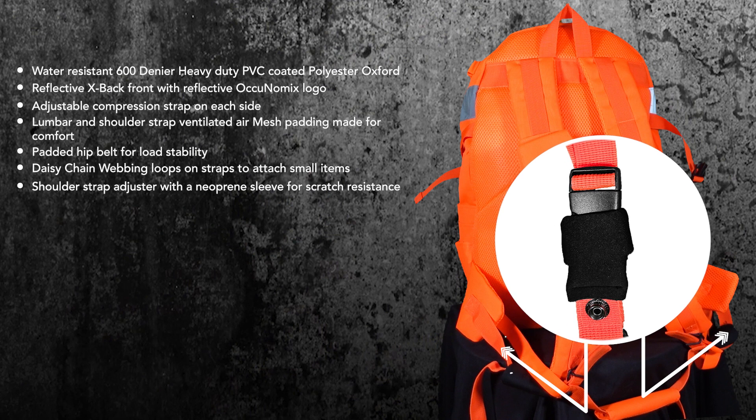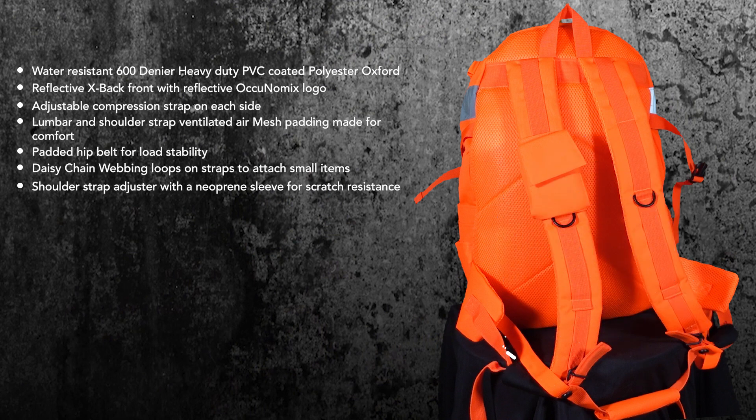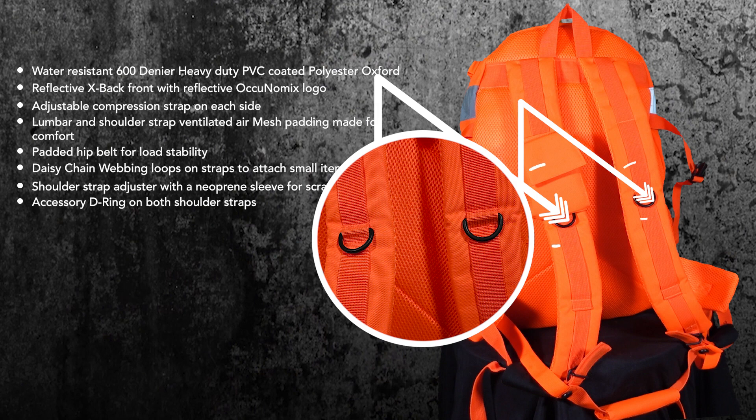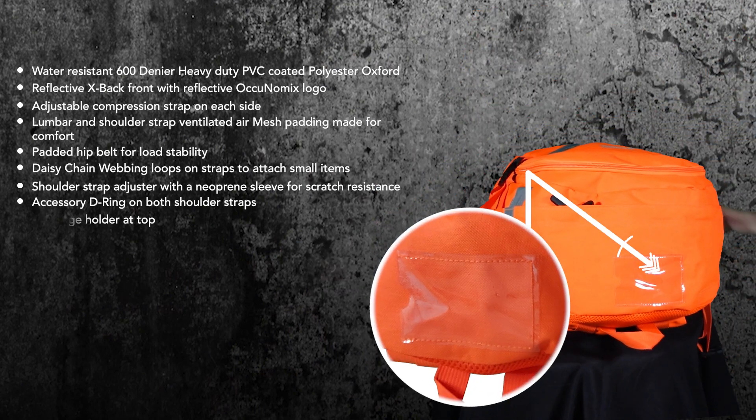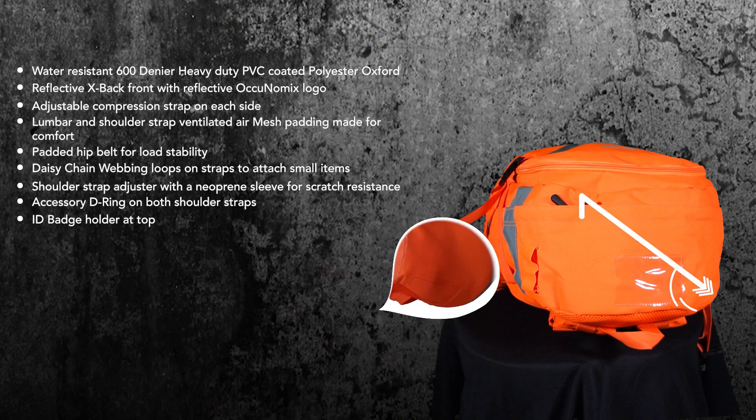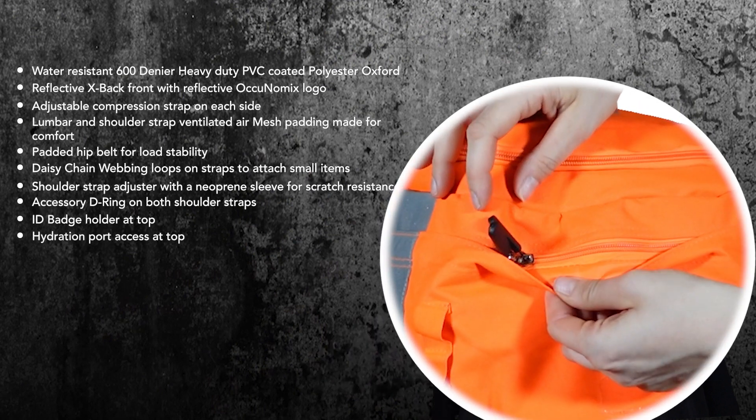Shoulder strap adjuster with a neoprene sleeve for scratch resistance. Accessory D-ring on both shoulder straps. ID badge holder at top. Hydration port access at top. Covered main compartment zipper.